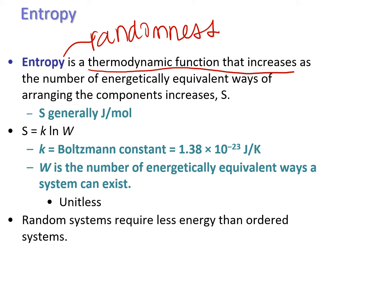Let's pick apart what this is saying. As the number of energetically equivalent ways of arranging something increases, entropy increases. You have more ways of having a specific type of arrangement, and the more possible ways you have of that arrangement, the more random it is — so that means entropy is higher.